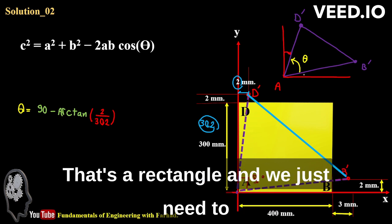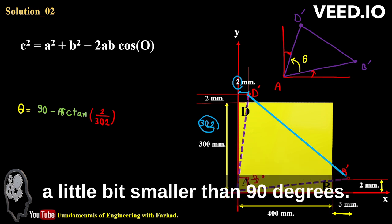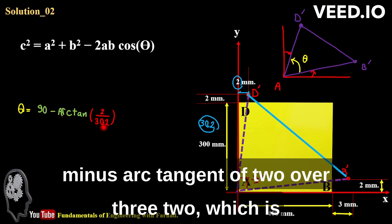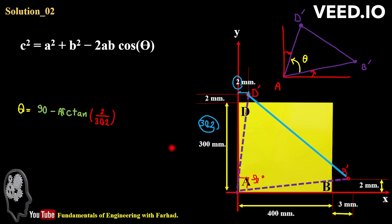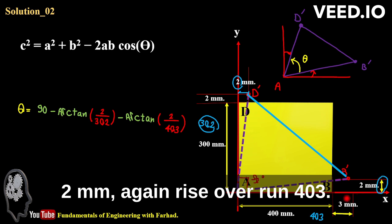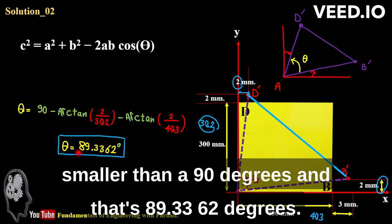And how can you calculate that? That's theta 90 degrees minus arc tangent of 2 over 302, which is this one. 2 millimeters over this rise over run, 403 millimeters. And if you do the math, it just gives you a little smaller than 90 degrees. And that's 89.3362 degrees.